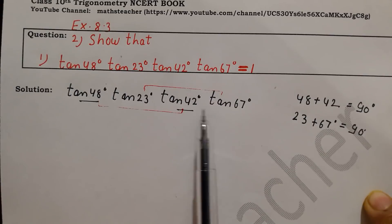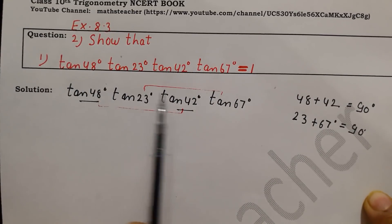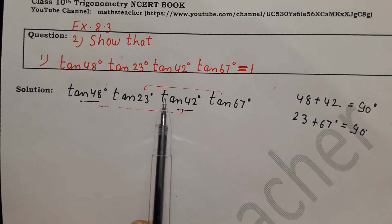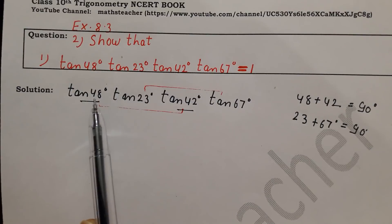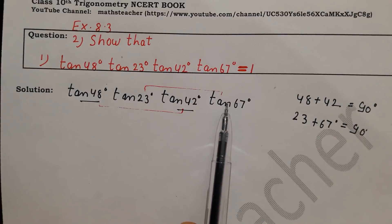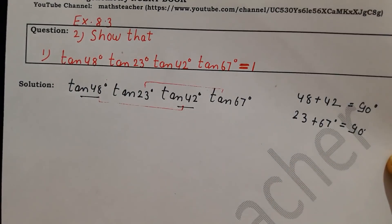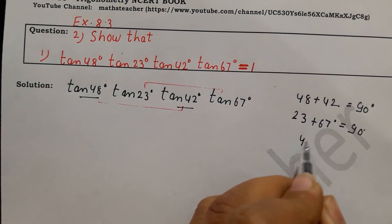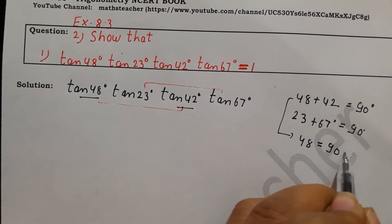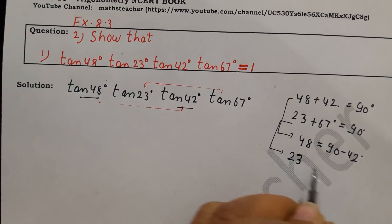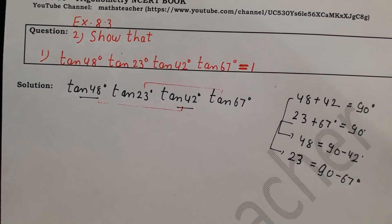After checking the pairing, we have to change 2 angles. Two angles will be changed; the other two will remain as they are. If we check the first angle, we change 48: its value is 90 minus 42°. And if we change 23, then it becomes 90 minus 67°.